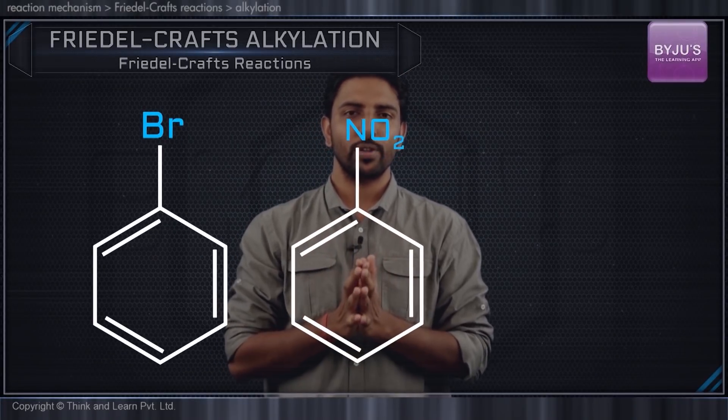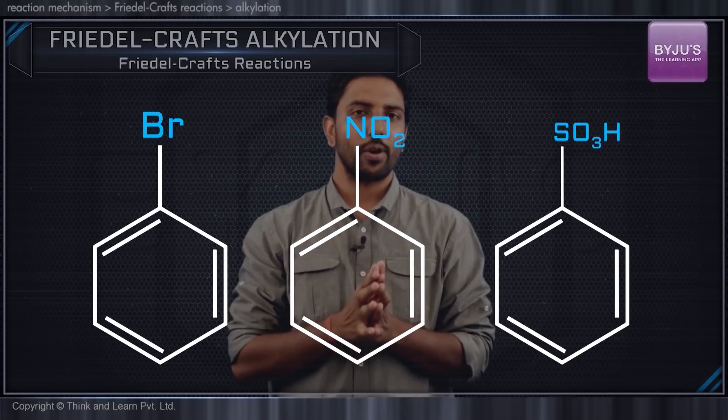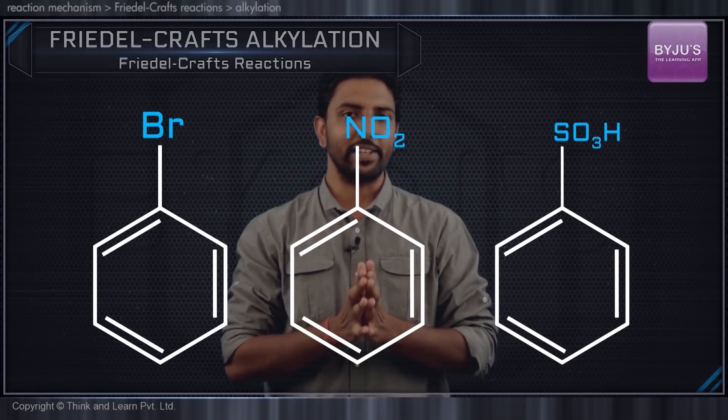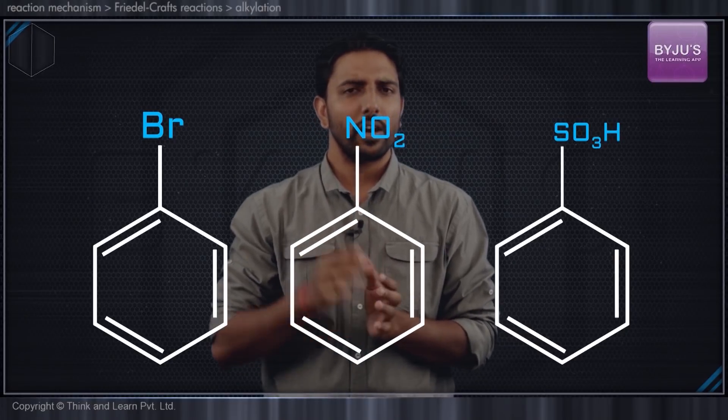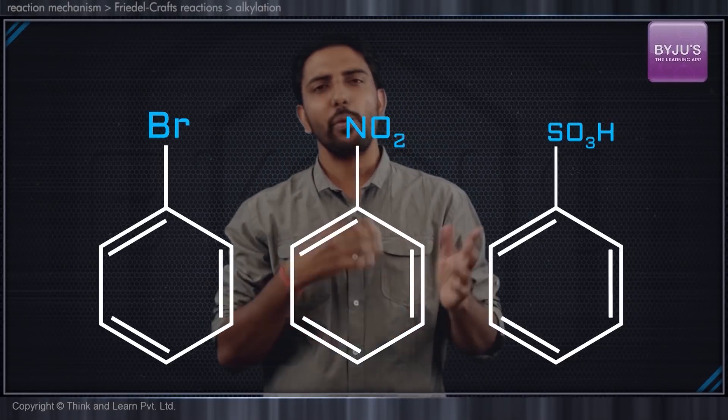Until now, we have managed to add a bromo group, a nitro group, or a sulfonic acid group on top of the benzene ring. Did you pause to think how do we manage to add a carbon chain on top of the benzene ring? How do we go about accomplishing this?